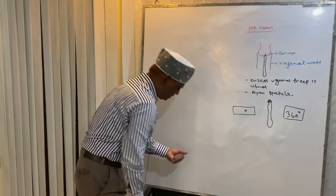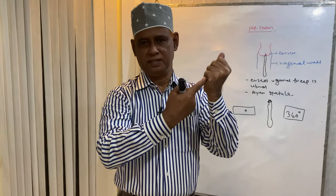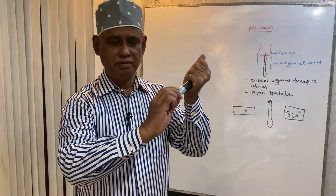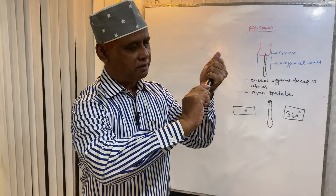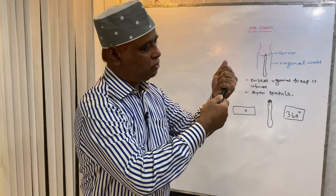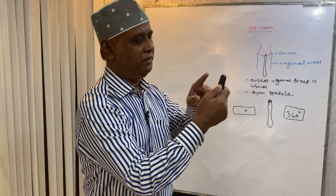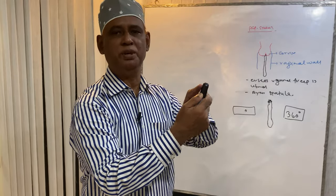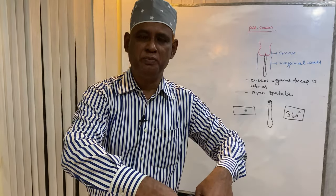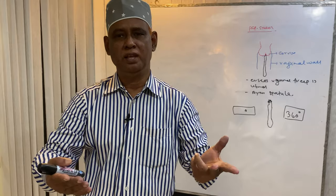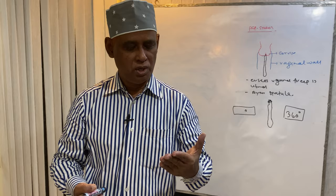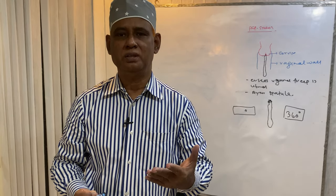In summary for PAP smear: introduce the Ayre's spatula into the cervix, rotate it 360 degrees, withdraw it, place material on the slide, make two smears, keep in fixative, and after fixation stain with Papanicolaou stain and examine under microscope to identify the pathology of the cervix.